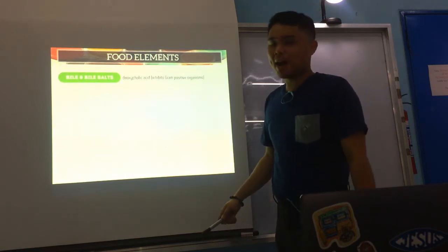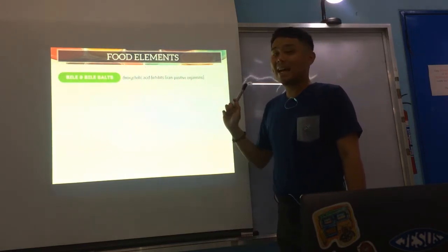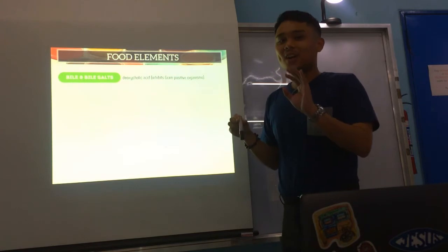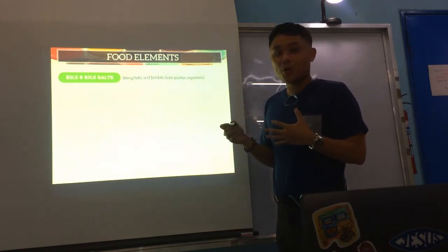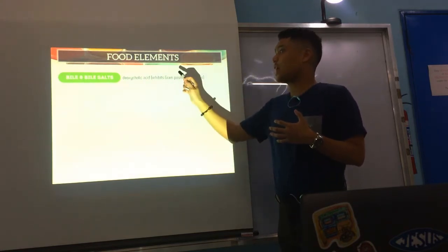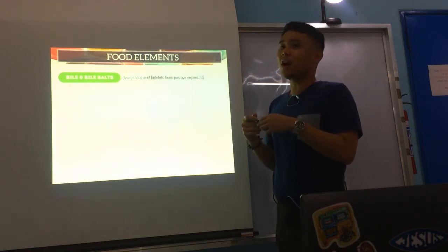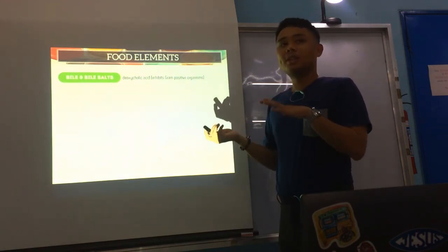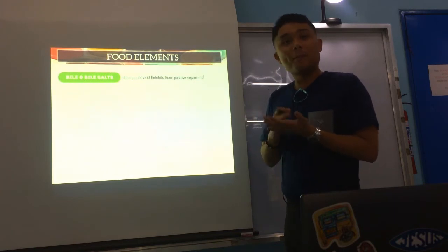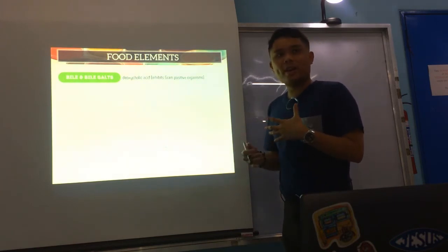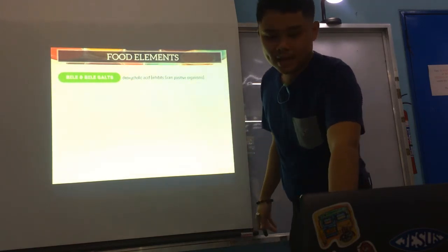Next is bile or bile salts, in the form of deoxycholic acid. These are a type of inhibitor, meaning they inhibit the growth specifically of gram-positive bacteria. There are types of culture media where we don't want gram-positive organisms to grow — only gram-negative — and that's where bile and bile salts are used.